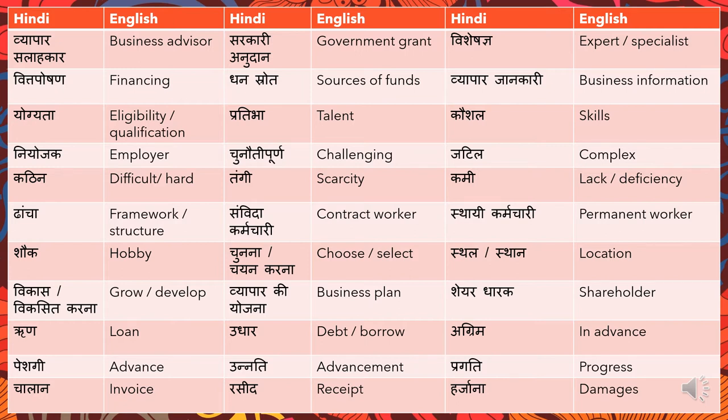'Dhan srot' means 'sources of fund' — srot is nothing but 'source.' 'Vyaapar jankari' means 'business information' — jankari means 'information.'